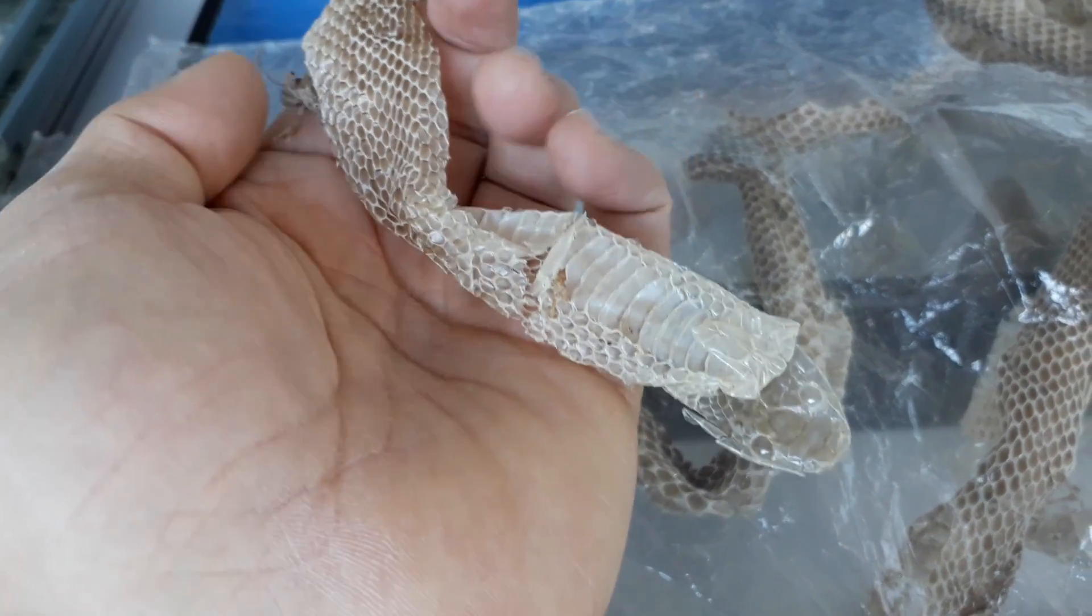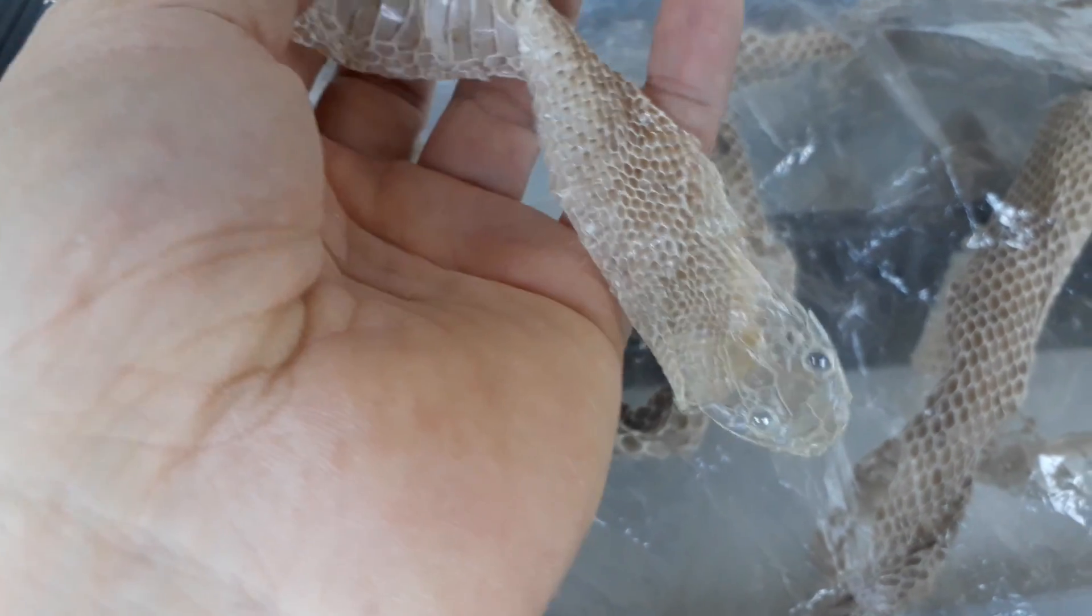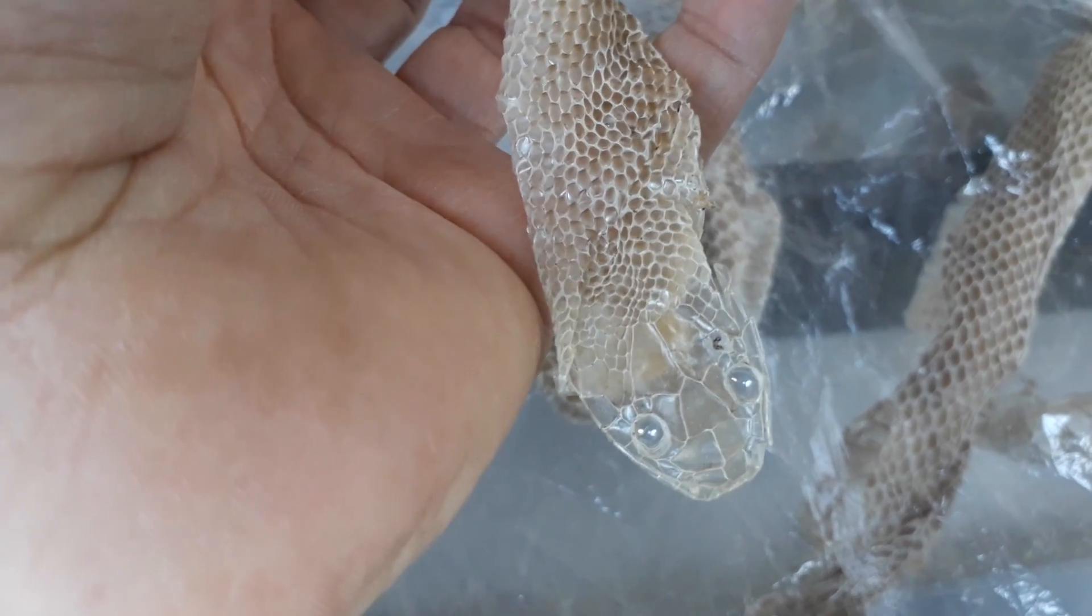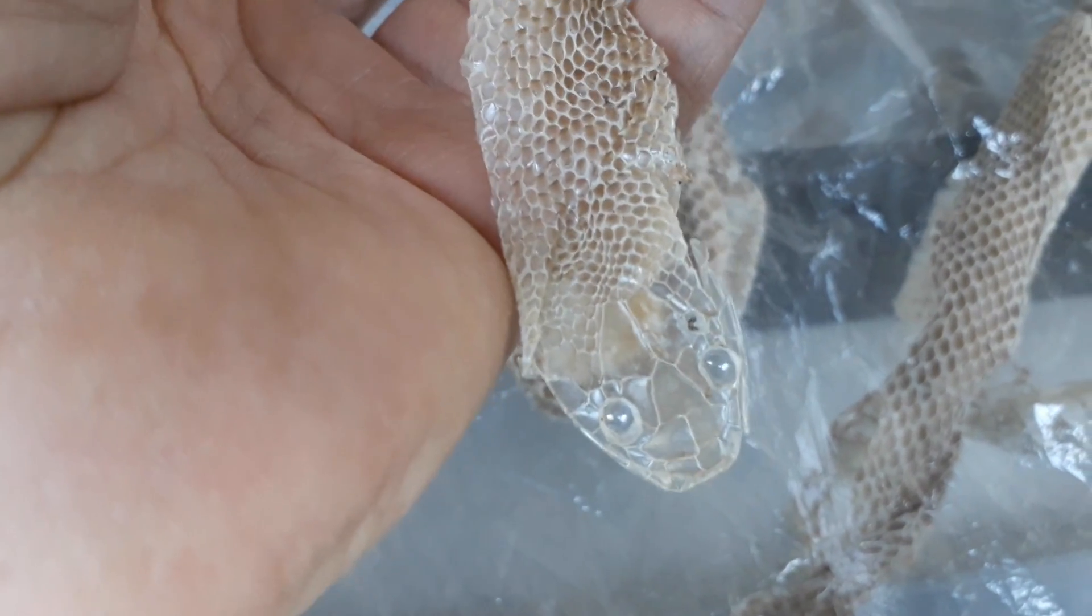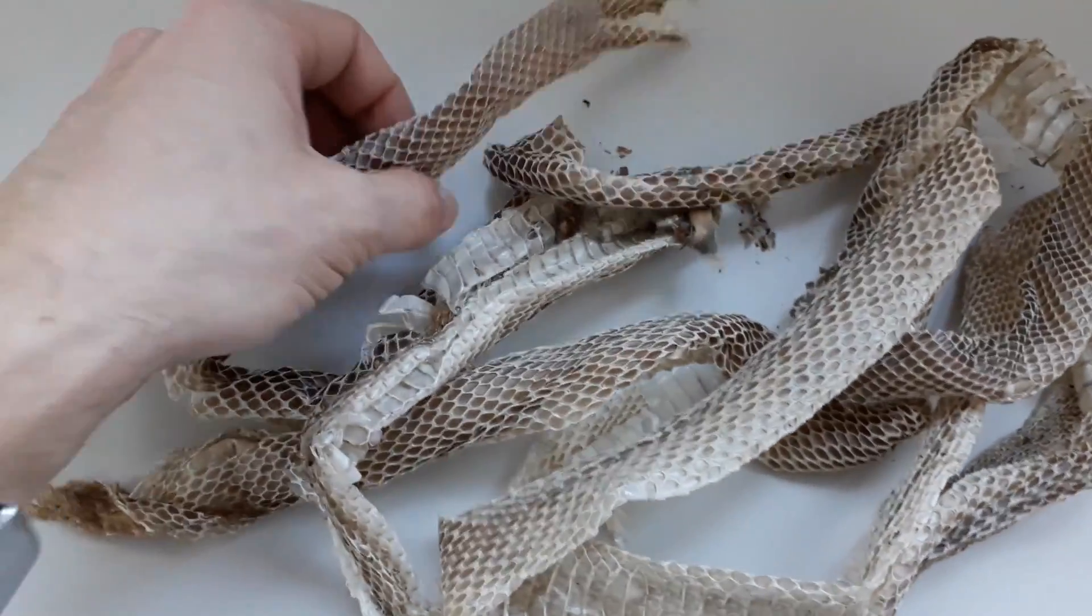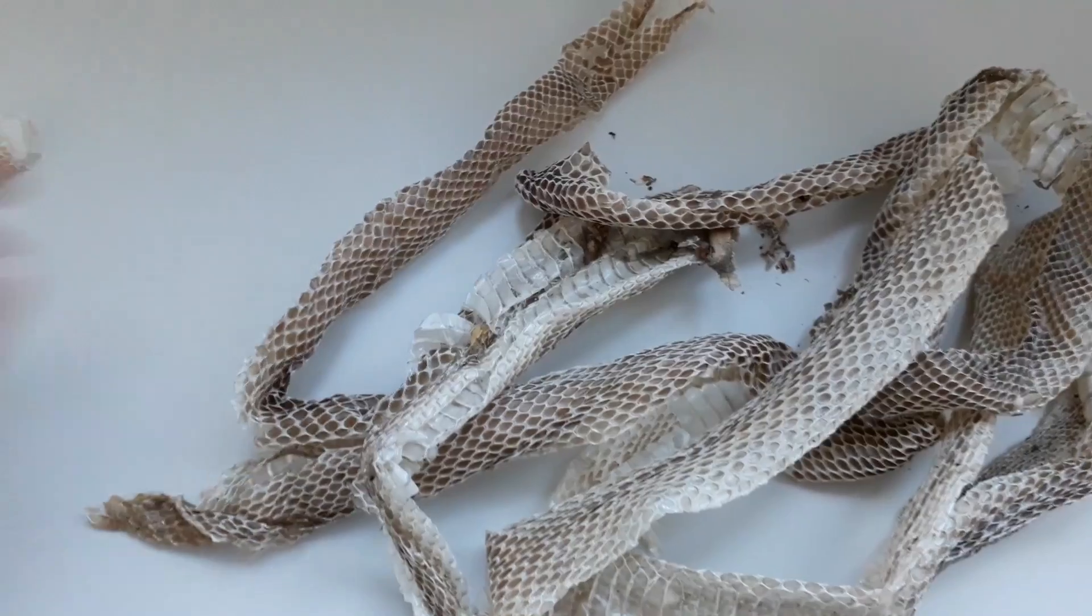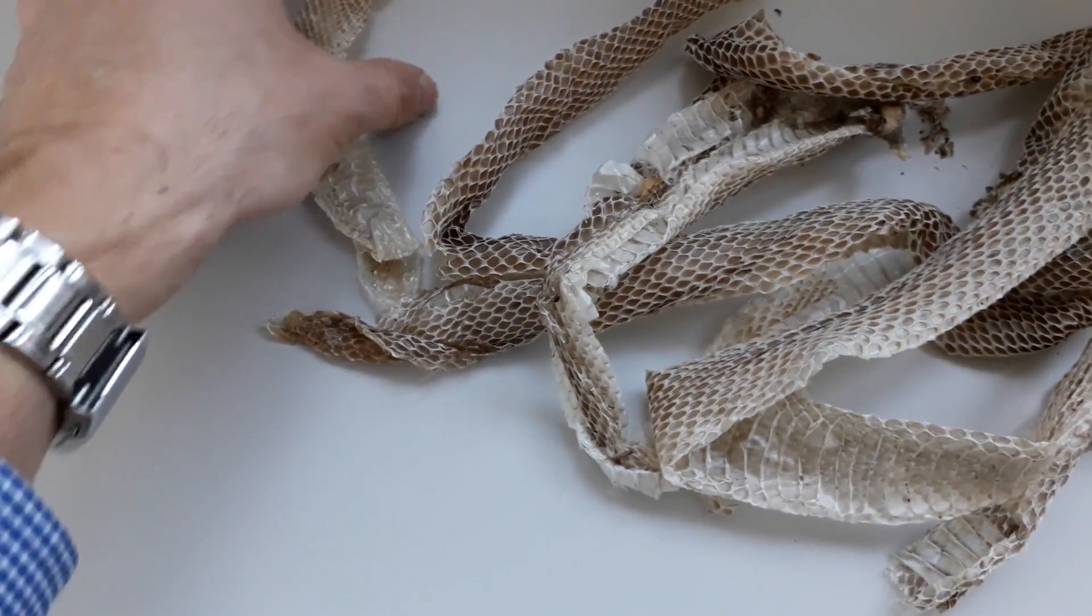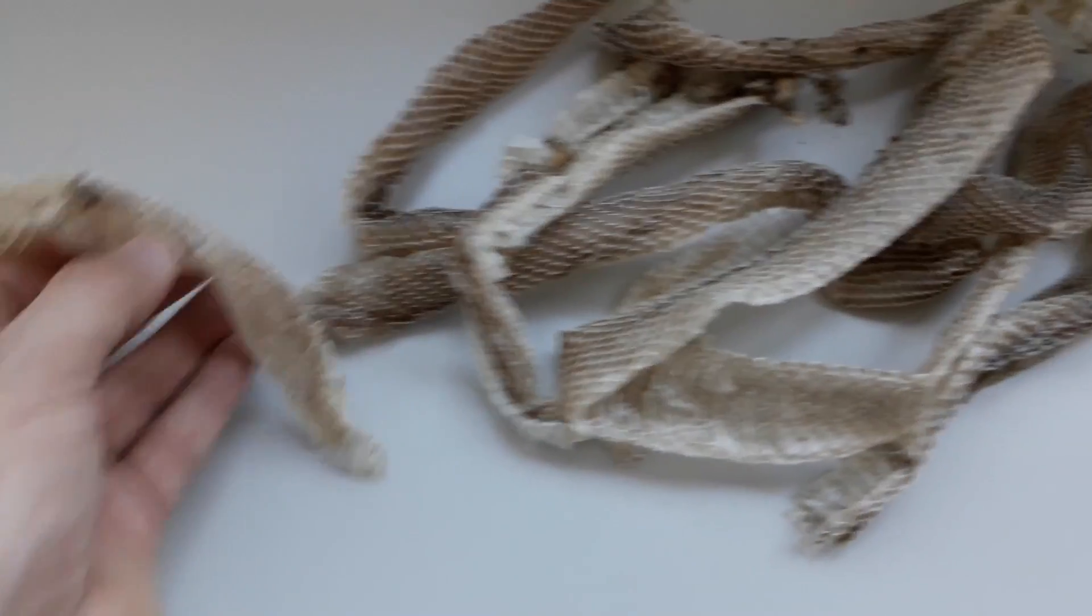If you're lucky enough, you can find snake skin like this in the forest. When snakes grow and their skin becomes too tight, they shed it off. A few years ago a student found this pretty complete snake skin in the forest.